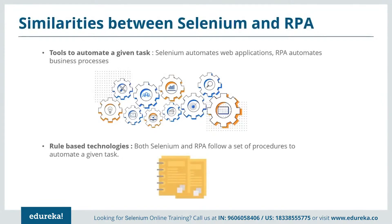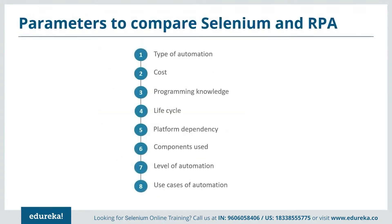Now let's take a look at the similarities between Selenium and RPA. Both are automation tools used to automate a task — Selenium automates web applications and RPA automates business processes. Both tools are rule-based, meaning they follow a set of procedures to automate any given task. The parameters for comparison include: type of automation, cost, programming knowledge required, lifecycle, platform dependency, components used, level of automation, and use case.